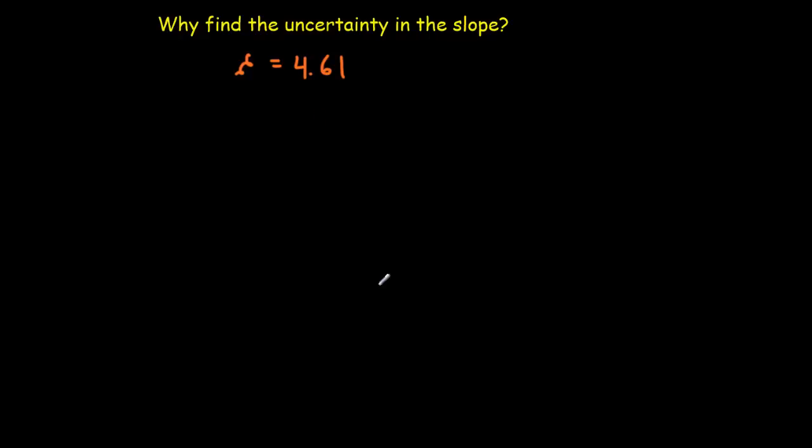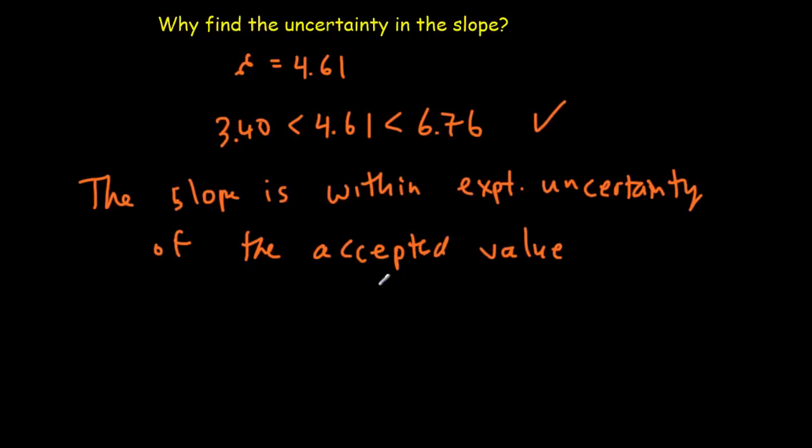So what we could then do is check to see whether 4.61 lies between our maximum slope and minimum slope. And in this case, it does. And that would mean that we could make a statement along the lines that the slope is within experimental uncertainty of the accepted value.